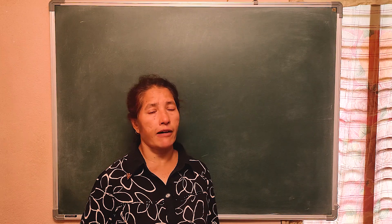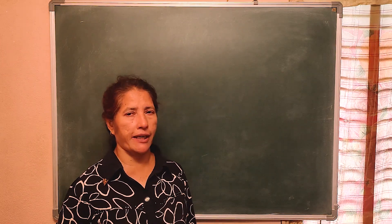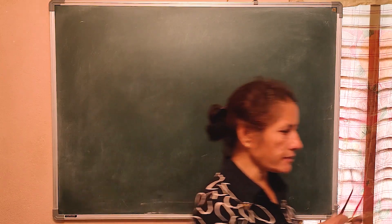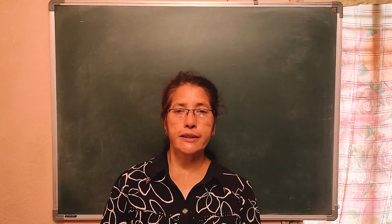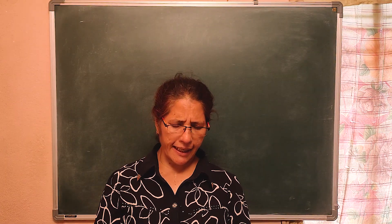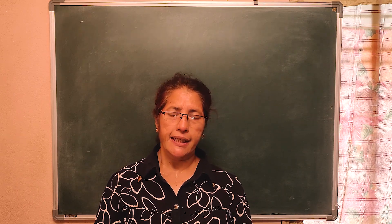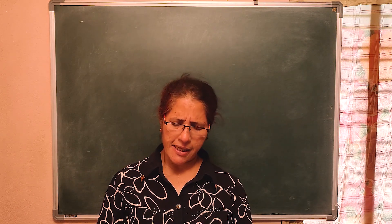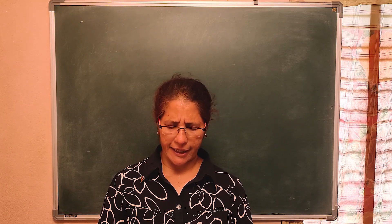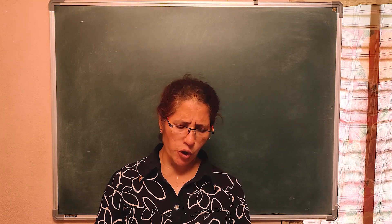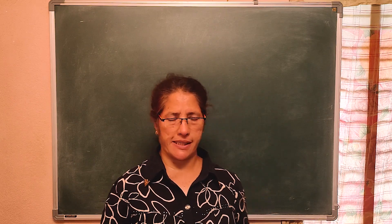Let me read out one problem for you. D, E, F are respectively the midpoints of sides AB, BC, and CA of triangle ABC. Find the ratio of the area of triangle DEF and triangle ABC.